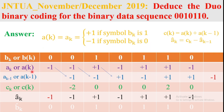First, calculate a(k). Using the rule: if the binary input symbol is 1 then a(k) = +1, and if the binary symbol is 0 then a(k) = -1. So: symbol 0 → -1, symbol 0 → -1, symbol 0 → -1, symbol 1 → +1, symbol 0 → -1, symbol 1 → +1, symbol 1 → +1, symbol 0 → -1.